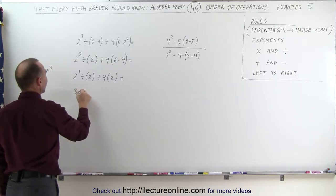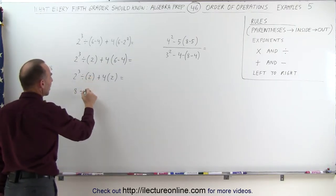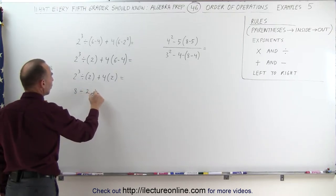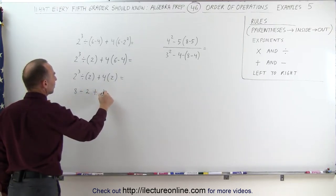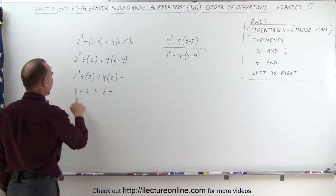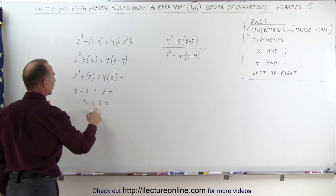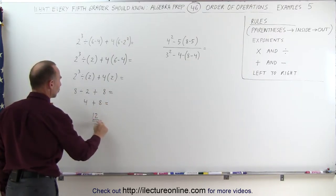We get 8 divided by 2 plus 4 times 2 which would be 8. 8 divided by 2, well that's 4 plus 8. And finally 4 plus 8 we can add it together and we get 12.